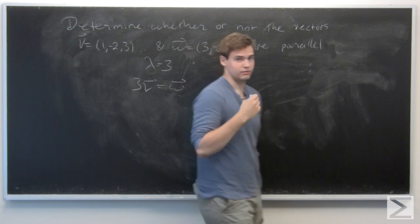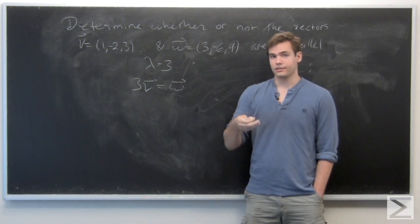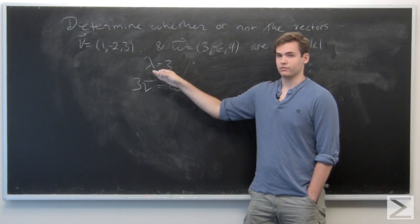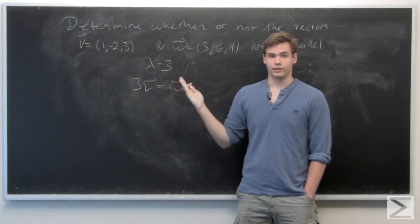So they are, in fact, parallel vectors. And the nice thing also is that since lambda is a positive real number, they are also pointing in the same direction.